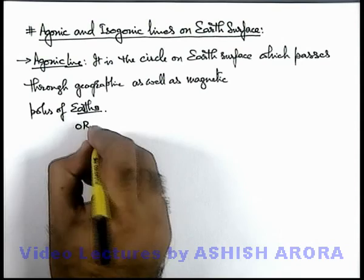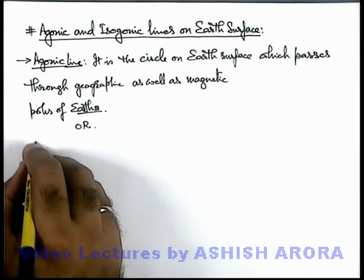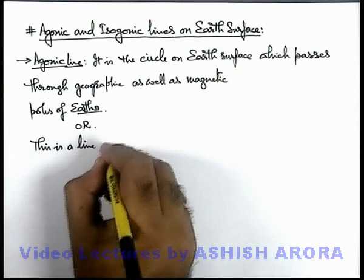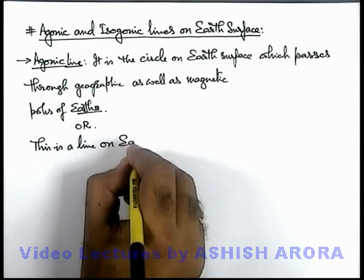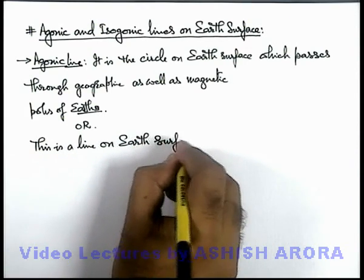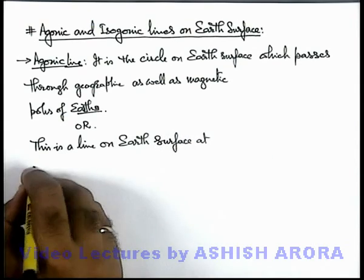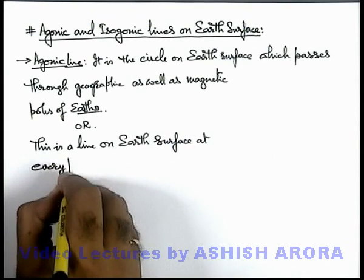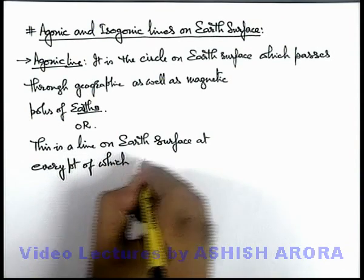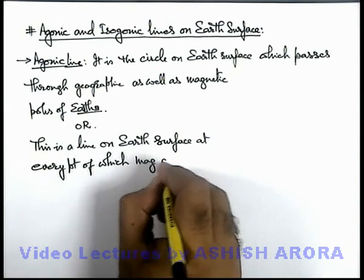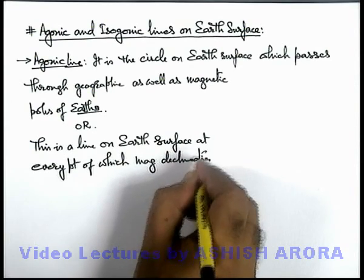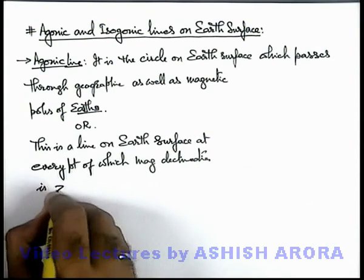Or this can also be written as: agonic line is a line on earth surface at every point of which magnetic declination is zero.